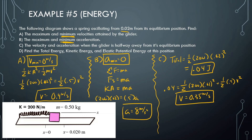For the acceleration at the halfway mark, we use kx = ma. k (200) times x (0.01) equals mass (0.5) times acceleration. So 200 times 0.01 divided by 0.5 gives us 4 meters per second squared.